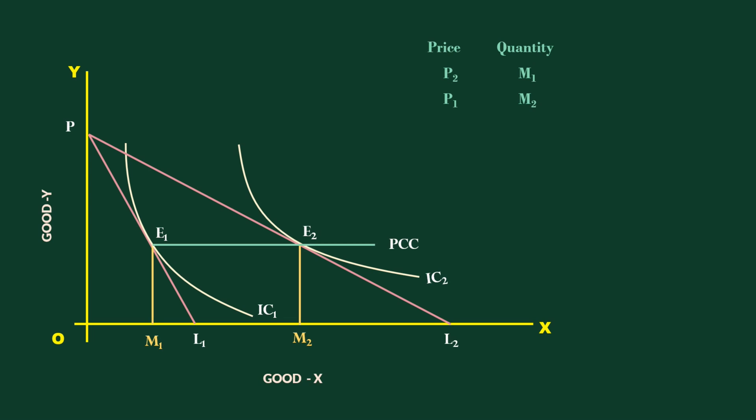Let us see how much total expenditure is incurred on good X at these two prices. The total expenditure in both cases is PN1. Even after a fall in price, the same expenditure is incurred. If the total expenditure doesn't change with a change in price, then elasticity is unitary. Price consumption curve which is parallel to X axis indicates unitary elastic demand.